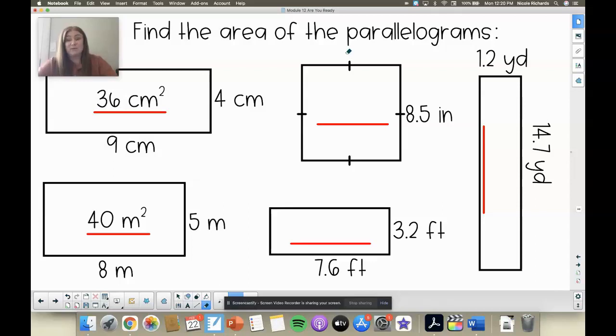So go ahead and do 8.5 times 8.5. So 8.5 times 8.5 is 72.25 inches squared.